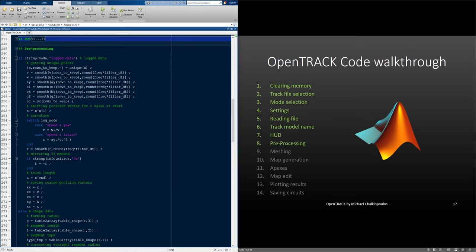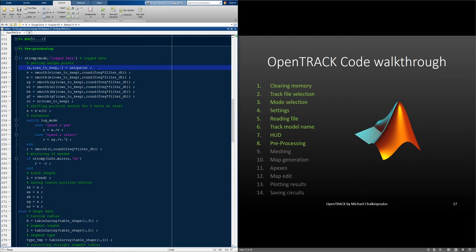Now, we pre-process the data before we start meshing the track. Again, we check in which mode we are in. If we are in log mode, we start saving the unique values of the distance vector and the rows we need to keep from the other variables.